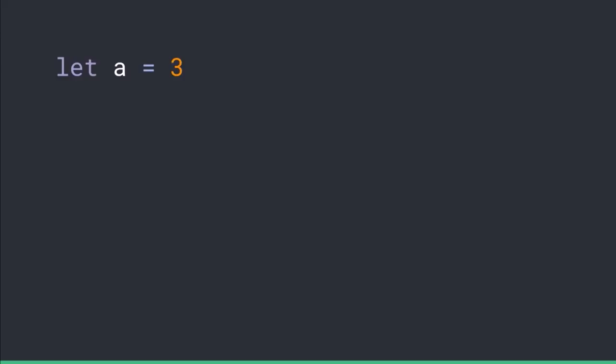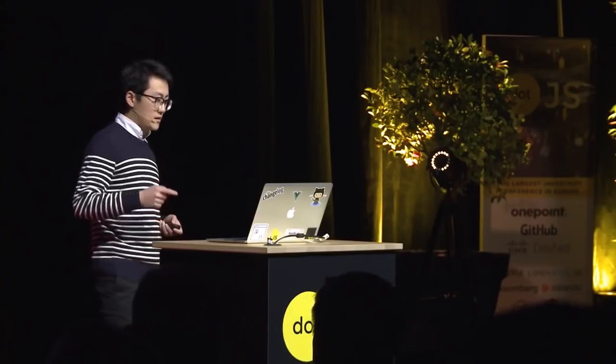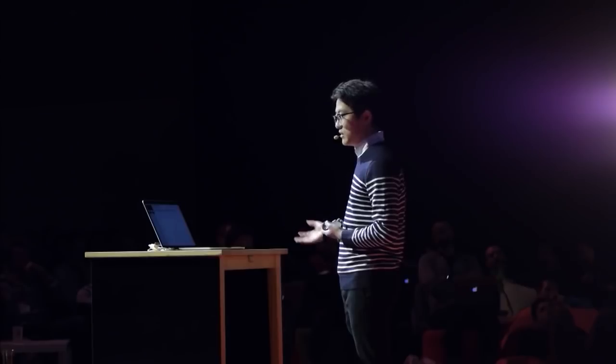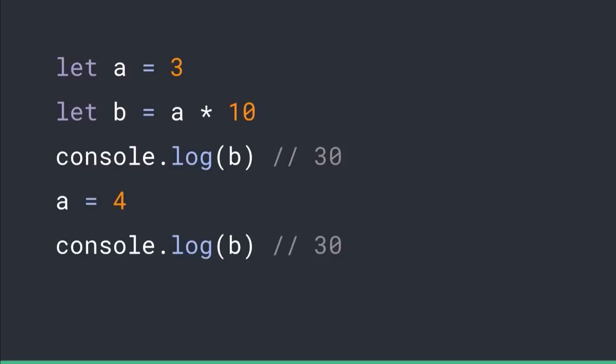One thing we know is that when state changes in our application, things happen — the framework does some work for us, and the DOM just updates. A lot of times it just seems like magic. So I want to take a step back and start with a very simple situation. Let's say we have a variable 'a' with a value of 3, and your boss gives you the requirement: variable 'b' must always be ten times the value of 'a'. So you write the program — b equals a times ten — log it, it's thirty. Correct program.